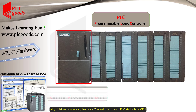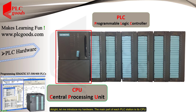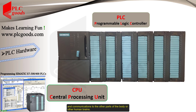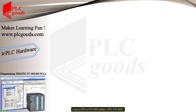Let me introduce my hardware. The main part or module of each PLC station is its CPU, which stands for Central Processing Unit. The CPU is the brain of the PLC — it is home to the PLC's logic, memory, and communications, just like the human brain is the source of our logical decisions, memory, and communications to other parts of the body.